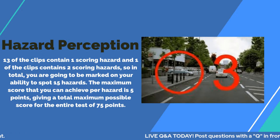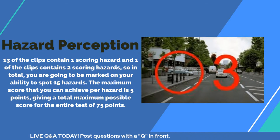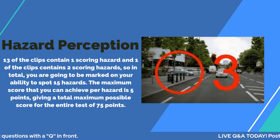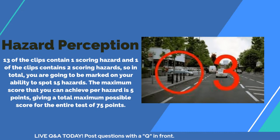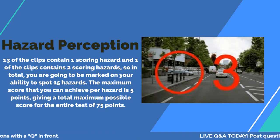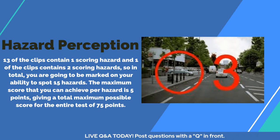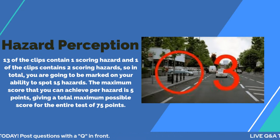You need to score 44 out of 75 on the hazard perception. The videos have now gone to CGI. I've recommended the DVSA app and the Driving Test Success app — those do a combination of CGI and old-school videos. But when you go to take your live theory test it's all CGI, and it's actually a lot slower than the apps, so it's slightly easier if you've practiced on those apps.